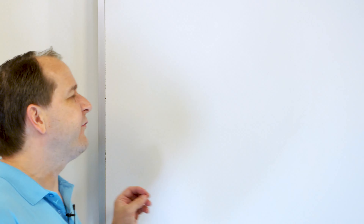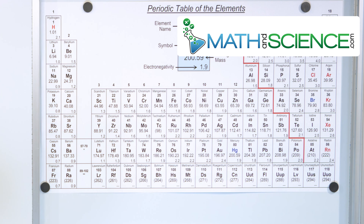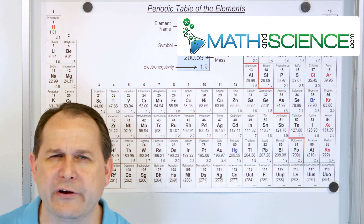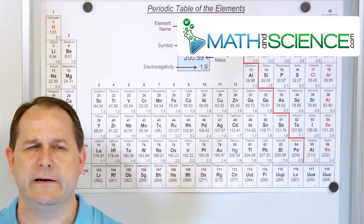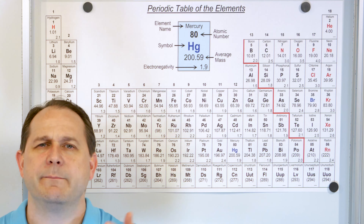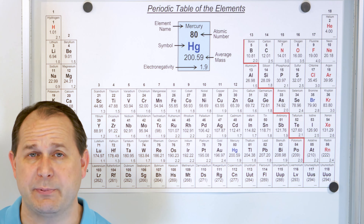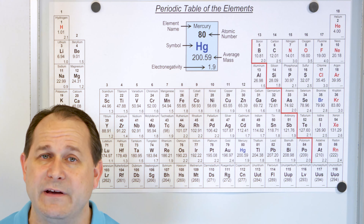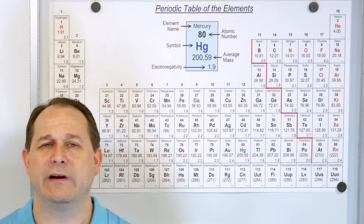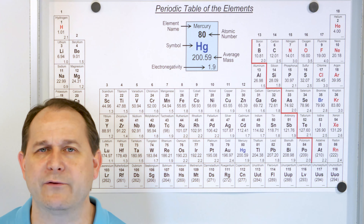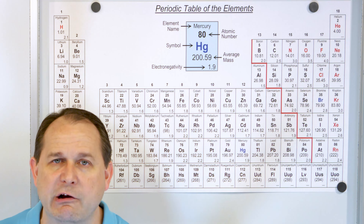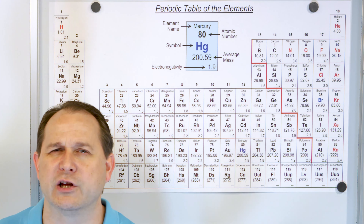Let's talk about the periodic table of the elements. Whatever textbook you're using or if you're on the internet, you can find many different flavors and varieties of the periodic table. They're going to look different than the one I have here, so just pull out the one that you have and follow along. They all have generally the same structure, but of course they'll look a little bit different.